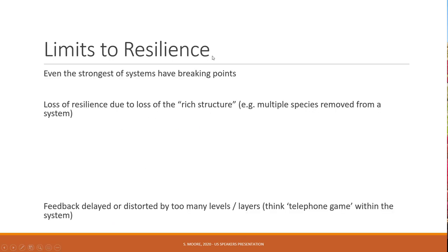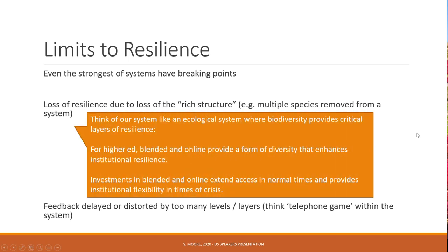Certainly there are limits to resilience — even the strongest systems have breaking points. Usually loss of resilience is due to loss of a rich structure. For example, when multiple species are removed from an ecosystem, that system becomes a lot less resilient to catastrophes. By having a richer infrastructure, we can have a more resilient system. If we think about our system like an ecological system where biodiversity provides critical layers of resilience, then for higher ed, blended and online learning provide a form of diversity that enhances institutional resilience. Investments in blended and online learning can extend access in normal times and provide institutional flexibility in times of crisis.